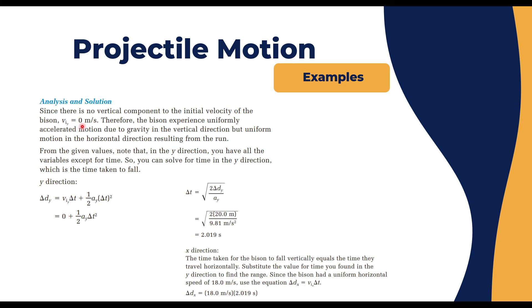v_iy is 0, we said, because he was running horizontally then jumped off the cliff. So it's 0 plus 1/2 a_y, which is 9.8, times Δt². Let's rearrange the equation: Δt equals the square root of 2 times Δd_y over a_y. We have all those as given, so Δt is 2.019 seconds.